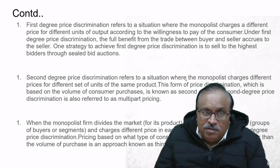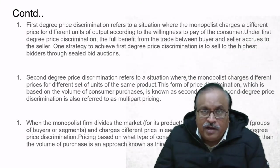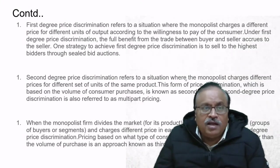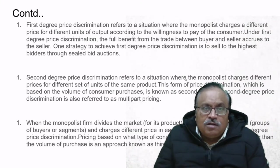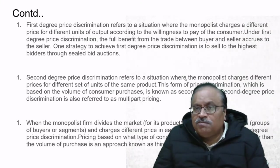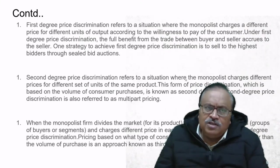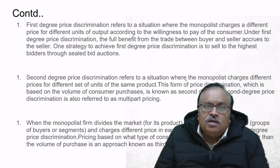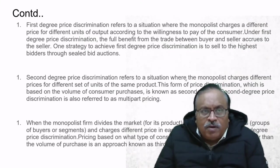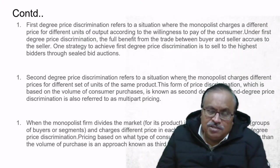Under first-degree price discrimination, the full benefit from trade between buyer and seller accrues to the seller. One strategy to achieve this is to sell to the highest bidder through sealed bid auctions—bidding and auctioning are part of the strategy for first-degree price discrimination.